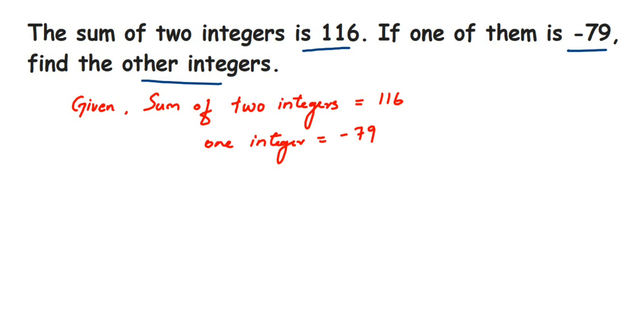Now, how I framed the equation before, the same thing I have to frame it now. I am going to assume the second integer to be x. So if I add two integers here, the sum is equal to 116 and one number I know is -79. I am going to assume the second number to be x. Now you can see we are forming a linear equation. We have to find out the value of x.